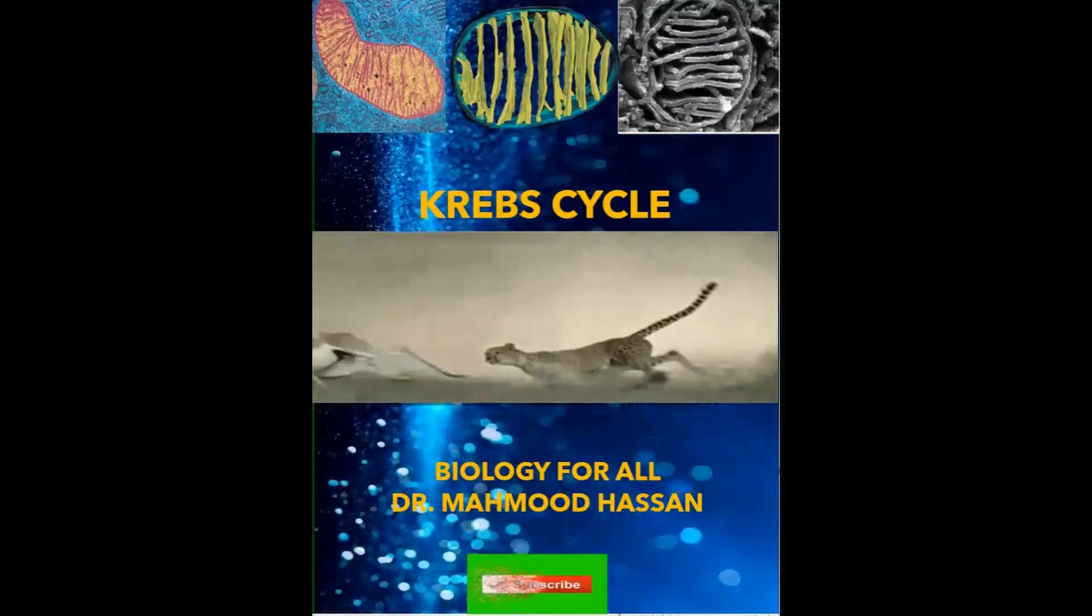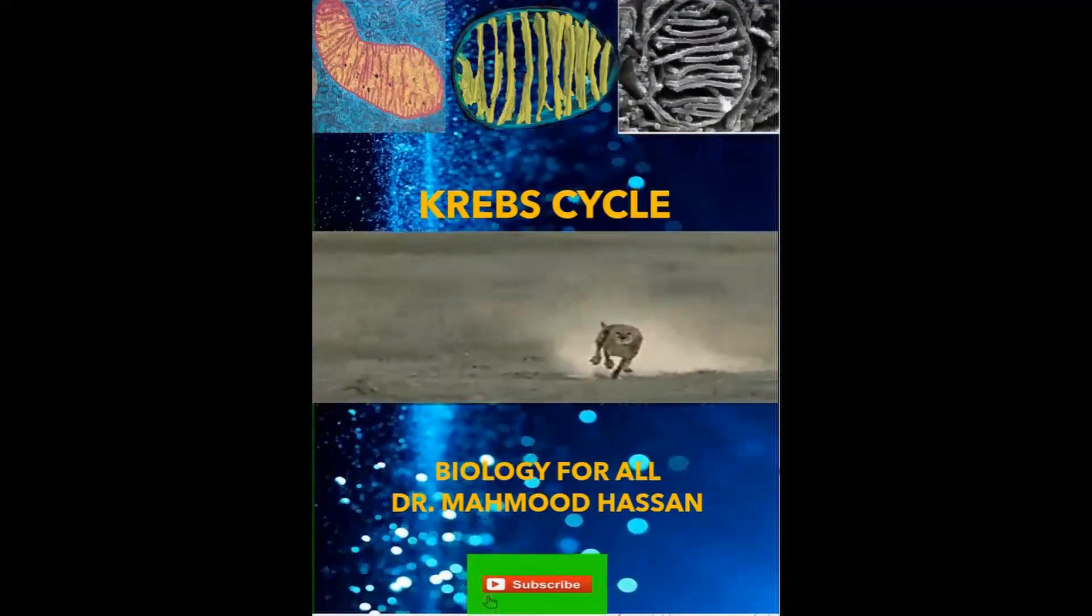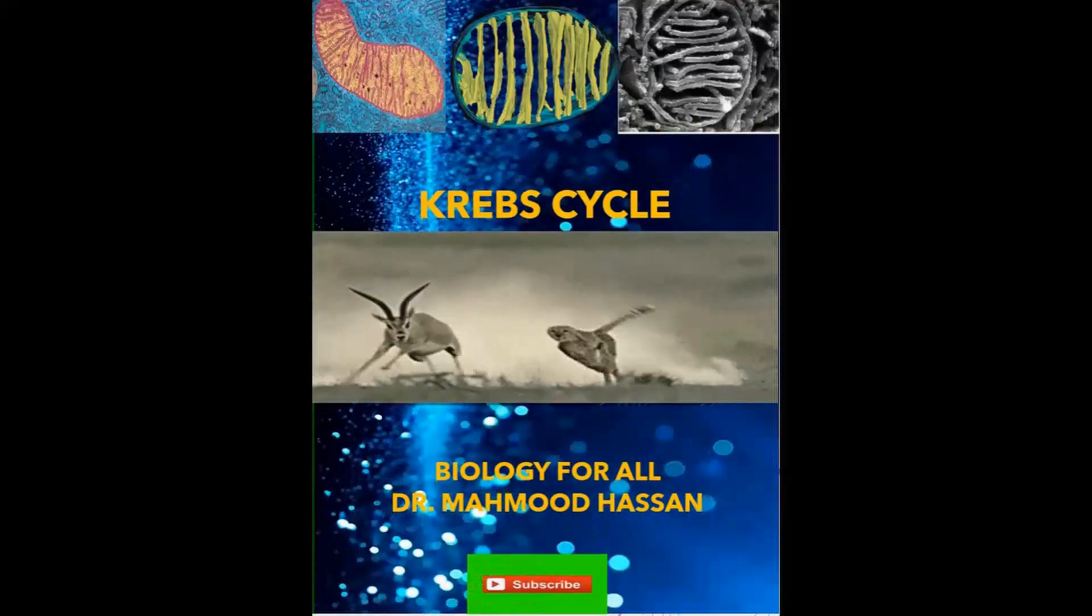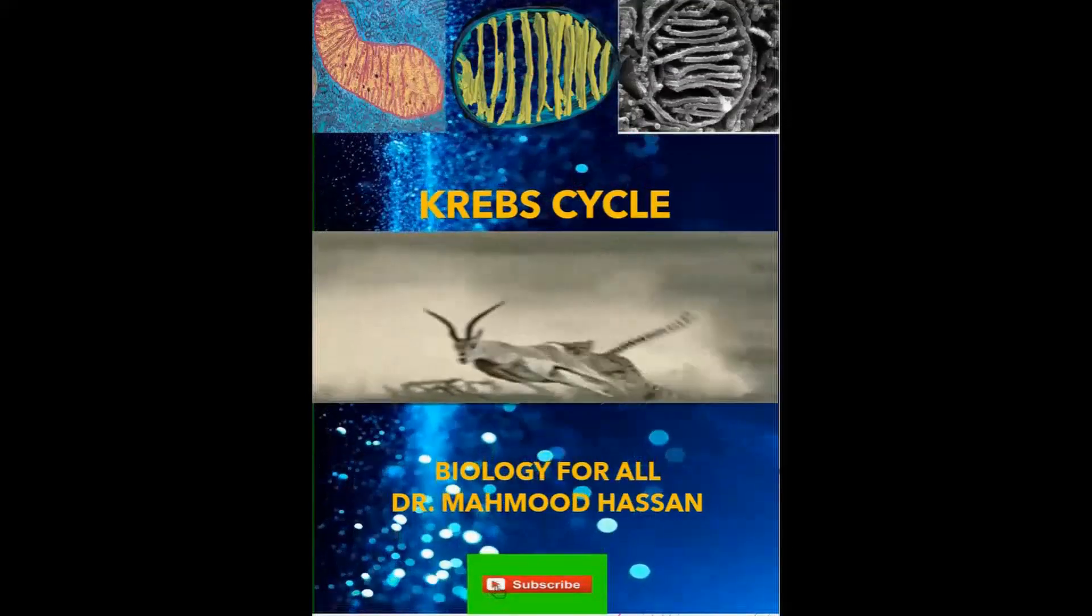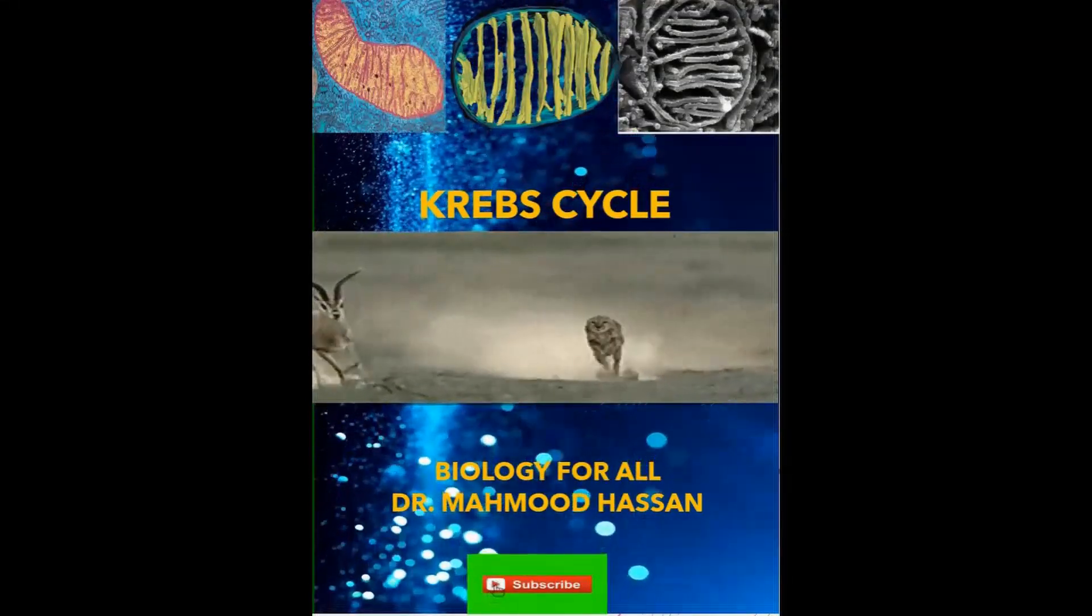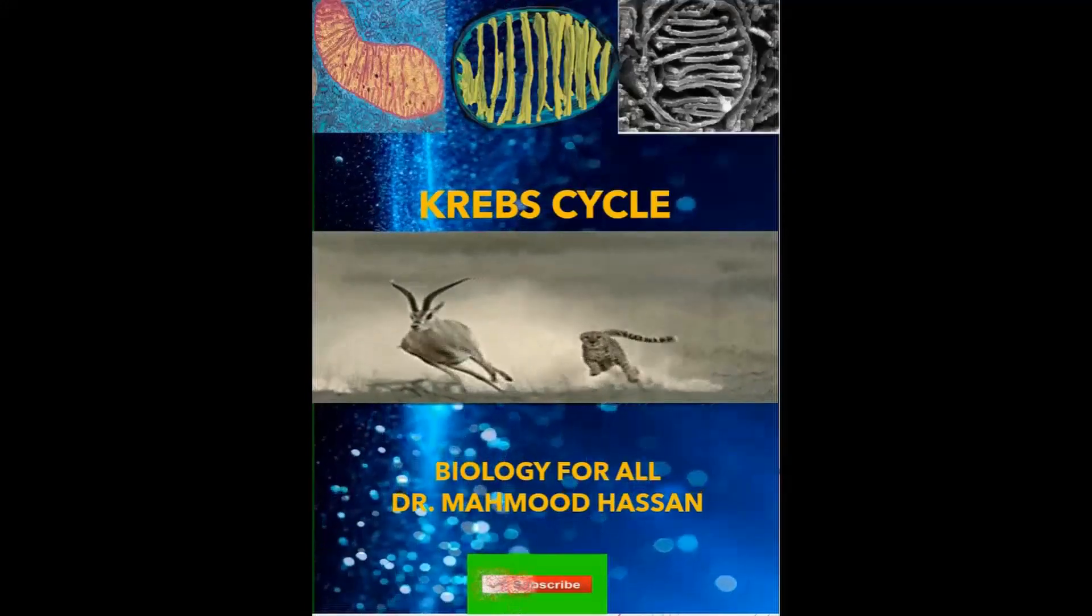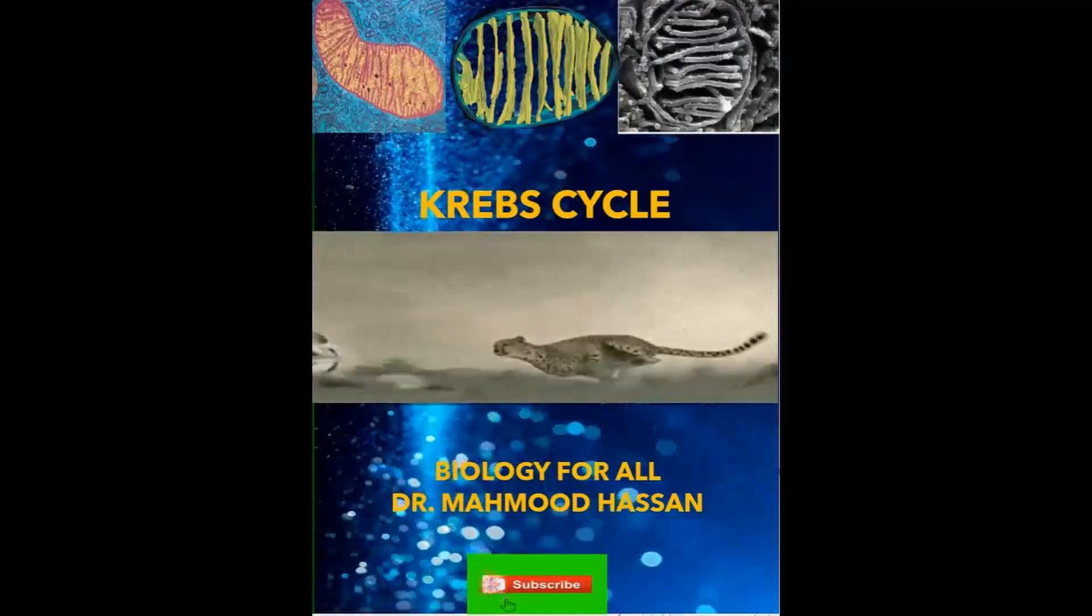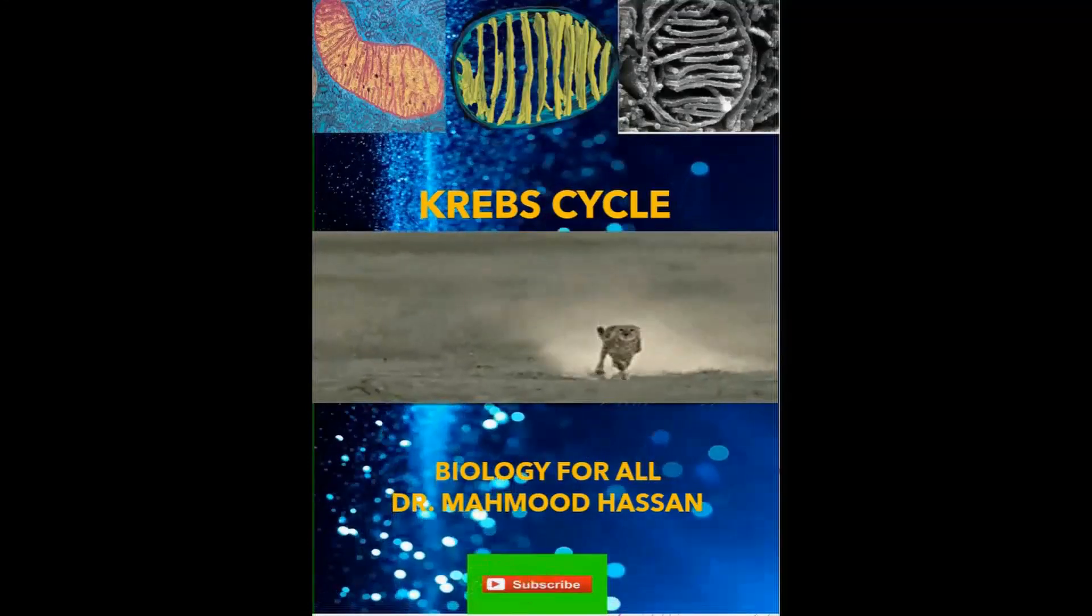The membranes of mitochondria divide the organelle into two aqueous compartments: one within the interior of the mitochondrion called the matrix and second between the outer and inner membranes called intermembrane space. The outer membrane is composed of approximately 50% lipid by weight.